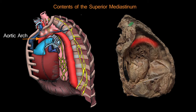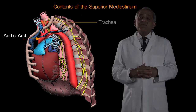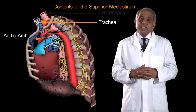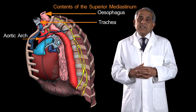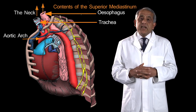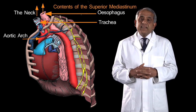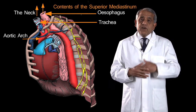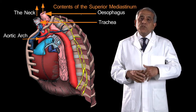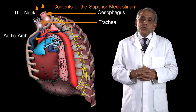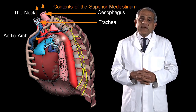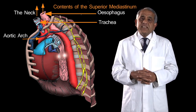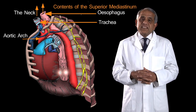In addition to the aortic arch, you have the trachea and the esophagus. Both of these structures start their journey in the neck at the same horizontal level, and then both of them enter the superior mediastinum from above, and then cross the superior mediastinum to enter the inferior mediastinum.